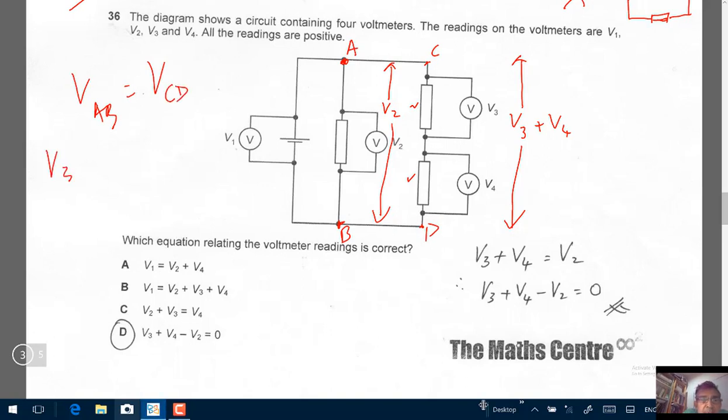So we can write V3 plus V4 equals to V2. That's what you see here. Bring the V2 to the left. You will get V3 plus V4 minus V2 equals to zero. Correct response D.